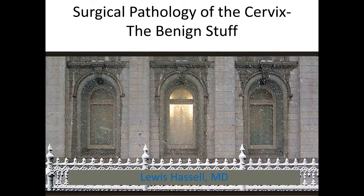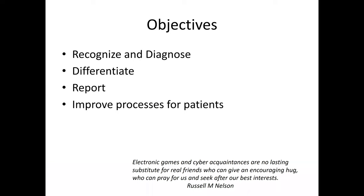Hello again, and welcome to another session of Resident Basics — things to understand and know in GYN pathology, directed at those who are new in training, and maybe some who have been around a bit longer but are trying to refresh on GYN pathology. Today our topic is the benign stuff in the cervix: things that create some confusion and present challenges for diagnosis with the more worrisome malignant lesions. Our objectives are to recognize and diagnose those entities, differentiate them from pertinent malignancies and pre-malignancies, talk about language for reporting, and think about how this improves processes for patients.